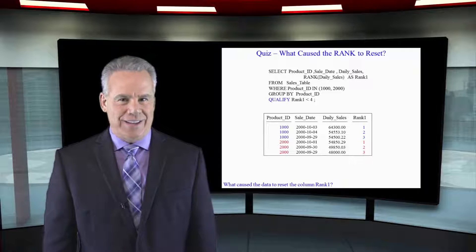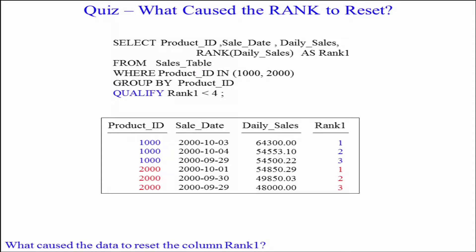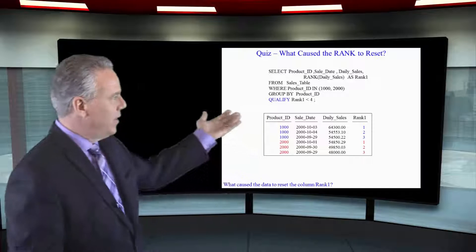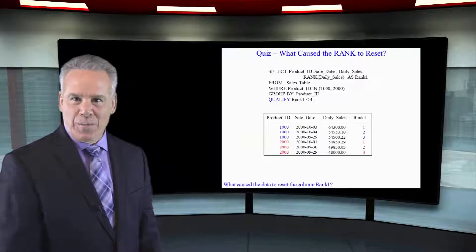We're using Teradata syntax. We've got a WHERE clause here that is asking for 1,000 and 2,000 product IDs. We've got a GROUP BY statement asking for product ID, and then we've got a QUALIFY statement that wants to qualify this rank less than four. We're going to get the top three daily sales per product ID.